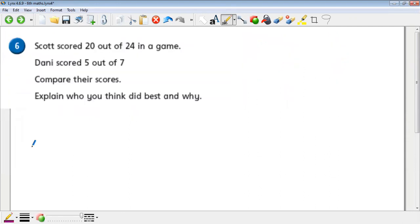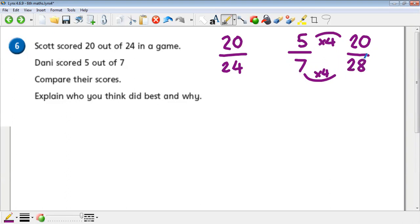Right then. So we've got Scott scored 20 out of 24, and Danny scored 5 out of 7. Hopefully you can spot what we're going to do here. We're going to have to turn this into 20. We're going to times that five by four, and we're going to have to times seven by four also. Seven times four, we know 28. So when you think about this and comparing their scores, who is closer to getting all of the tests correct, or winning the game? 20 is closer to 24 than 20 is to 28, so this fraction here must be bigger.